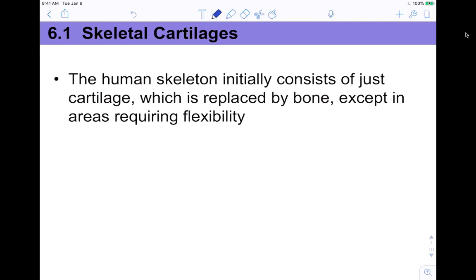We're going to talk about cartilage first, because bone kind of starts off as cartilage. The human skeleton initially consists of just cartilage. When you were a little fetus before you're born, you're kind of squishy. Even after babies are born, they're squishy — you can't touch their head because it can get misshapen, and if you lay them on their backs all the time, they get flat head syndrome. It's because you're mostly cartilage. It's later replaced by bone, except in areas where you have a lot of flexibility as an adult.